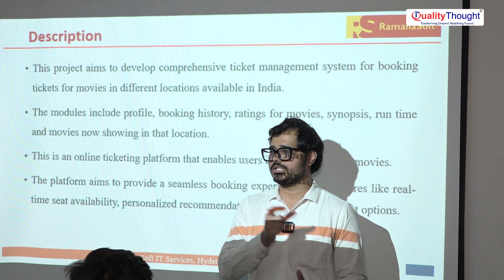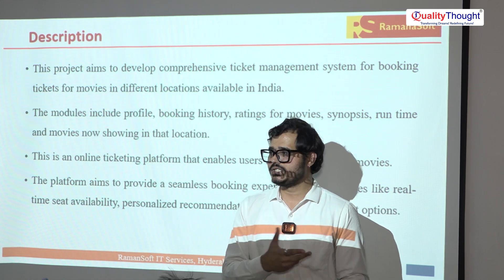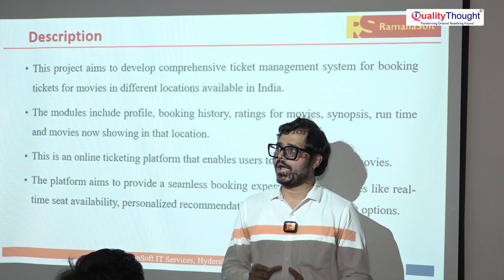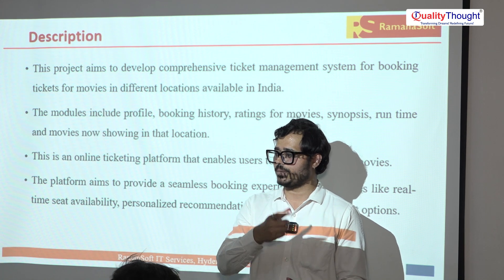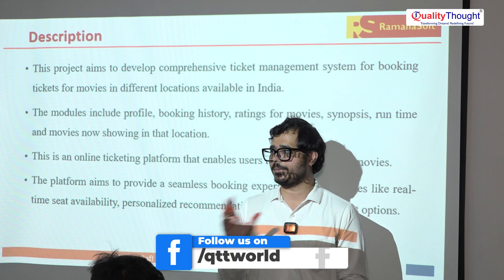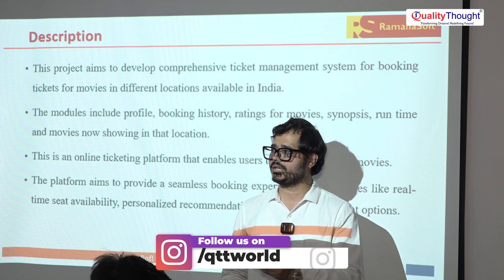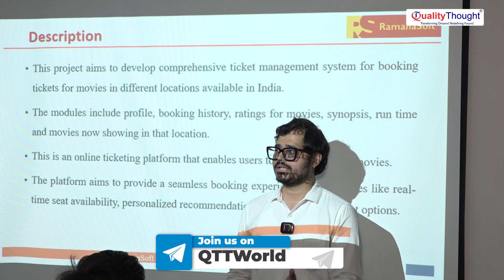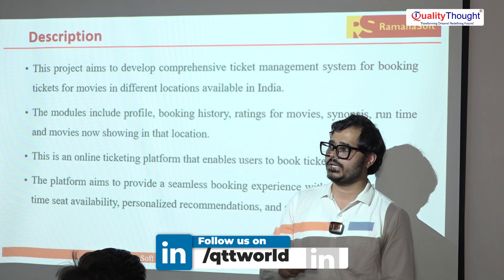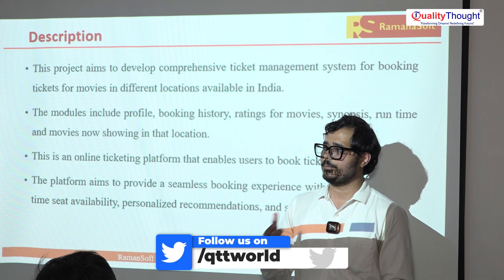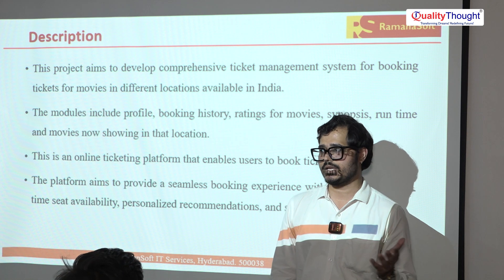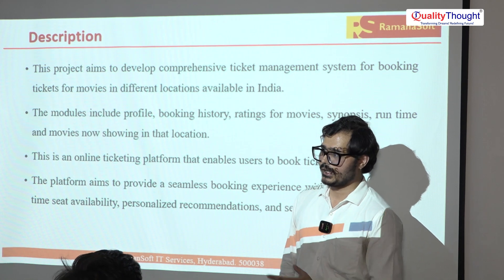If you click any seats, you can select a maximum of six seats per transaction. There is a pay button showing how much amount is calculated based on the number of seats selected. Once you click pay, it goes to the booking summary page displaying the movie name, theater name, seat numbers, and convenience fee. If you click the pay button there, it goes to the payment integration page where you pay the amount. Once payment is done, you go to the order history where you can see your booked tickets.